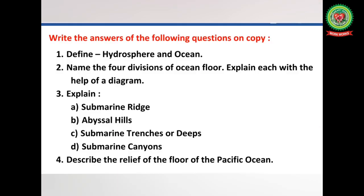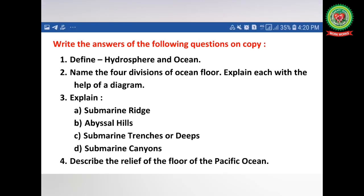Children, write the answers to the following questions on your copy: number one, define hydrosphere and ocean; number two, name the four divisions of the ocean floor and explain each with a diagram; number three, explain submarine ridge, abyssal hills, submarine trenches, and submarine canyons; number four, describe the relief of the ocean floor of the Pacific Ocean. Hope you have understood the chapter — please read the topic from your book and see the given school link and YouTube link. Thank you very much.